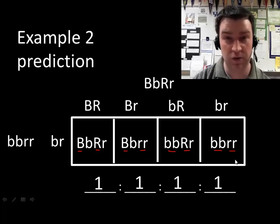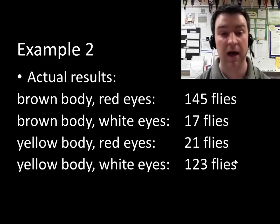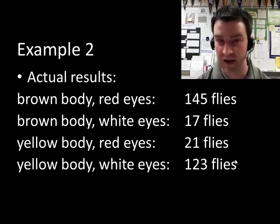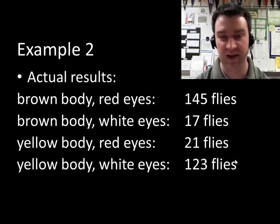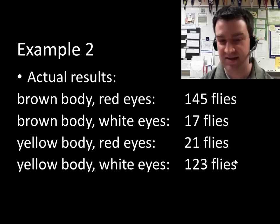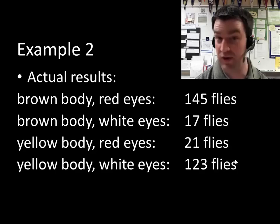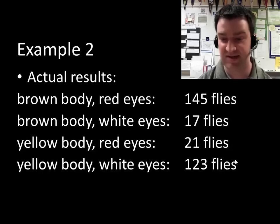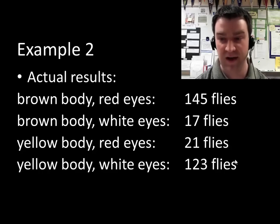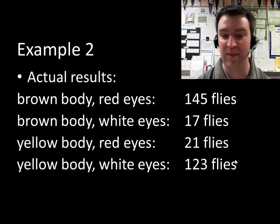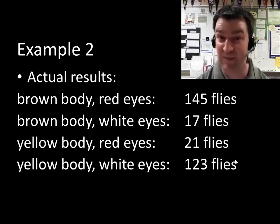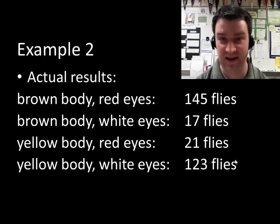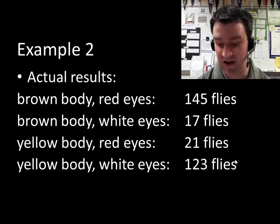What if we actually do that cross and we get results like this: a lot with brown body and red eyes, very few with brown body and white eyes, very few with yellow body and red eyes, and a lot with yellow and white eyes. It's almost as if the dominant alleles were inherited together and the recessive alleles were inherited together. We'll argue later that this may be due to the genes being on the same chromosome pair — they're linked.